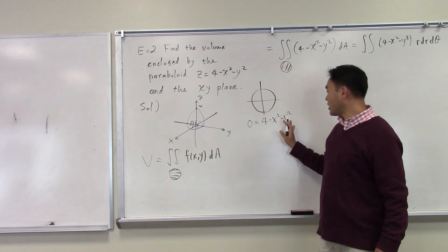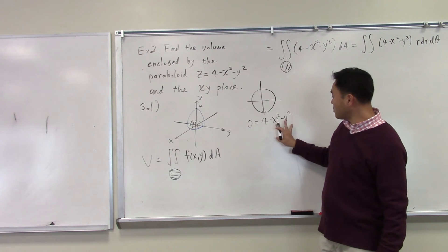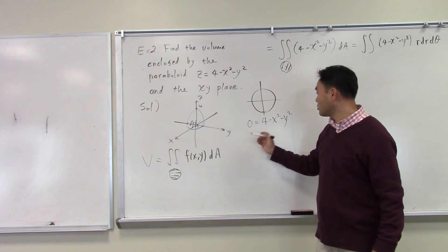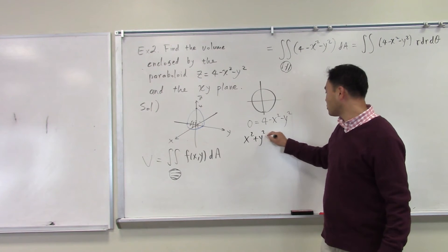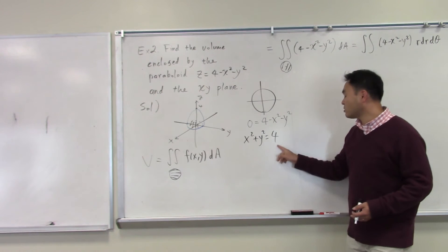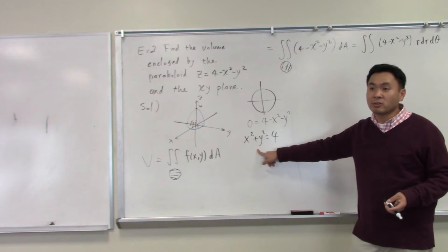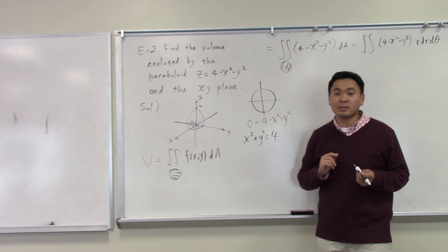And if you modify this slightly by moving the x squared and y squared to the other side, you get x squared plus y squared equal to 4, which says it's a circle centered at the origin, and the radius is 2.